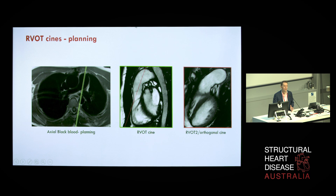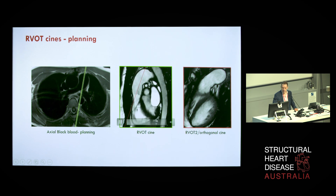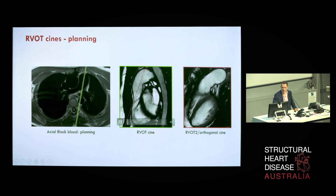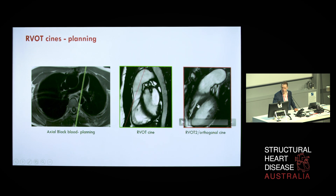The next step is assessing the right ventricular outflow tract, done by reverting to imaging planning from black or white blood images. You can appreciate the main pulmonary artery diverging into its branches, and an oblique sagittal image passing through the main pulmonary artery generates the RVOT cine — showing the anterior wall of the RV, the pulmonary valve, its distensibility, the RVOT's distensibility, and any dilatation of the main pulmonary artery. An orthogonal second RVOT view is then acquired.